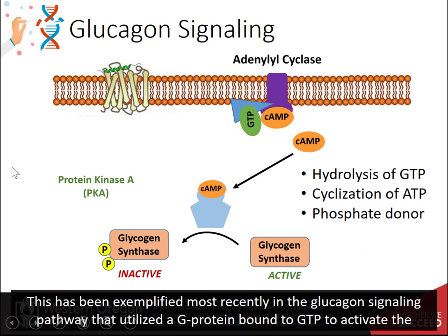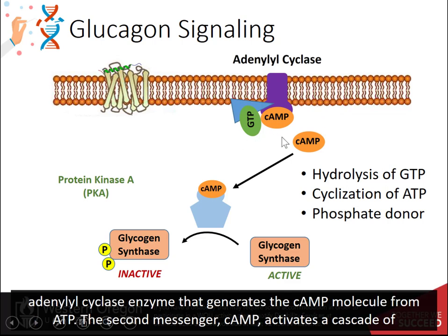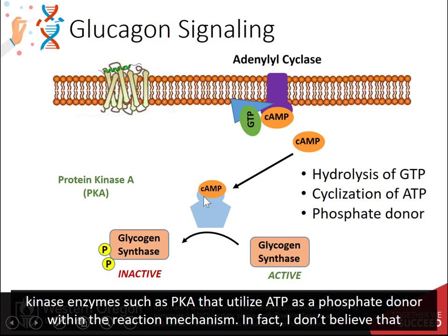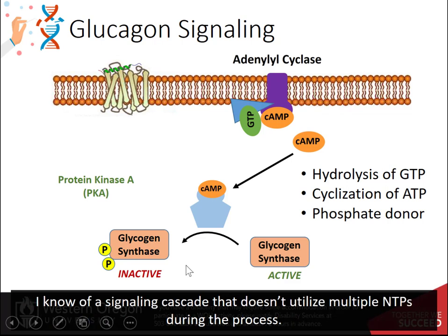This has been exemplified most recently in the glucagon signaling pathway that utilized a G protein bound to GTP to activate the adenylyl cyclase enzyme, which generates the cyclic AMP molecule from ATP. The second messenger cyclic AMP activates a cascade of kinase enzymes such as protein kinase A, which utilizes ATP as a phosphate donor within the reaction mechanism. In fact, I don't believe I know of a signaling cascade that doesn't utilize multiple NTPs during the process.